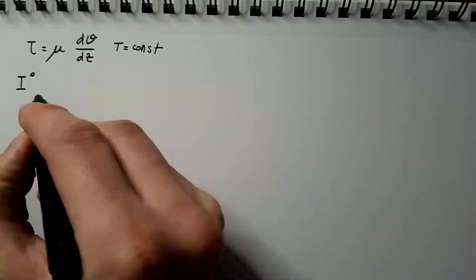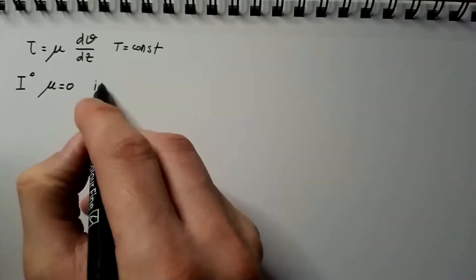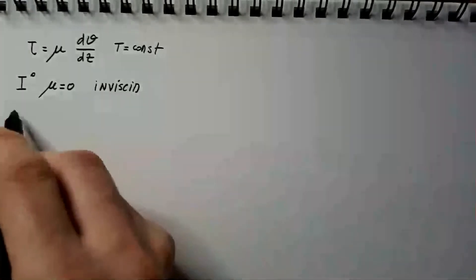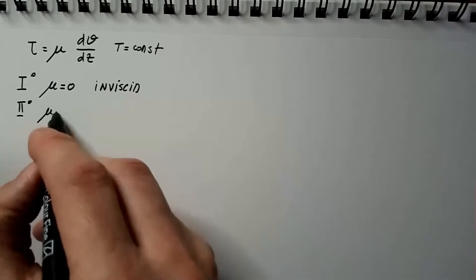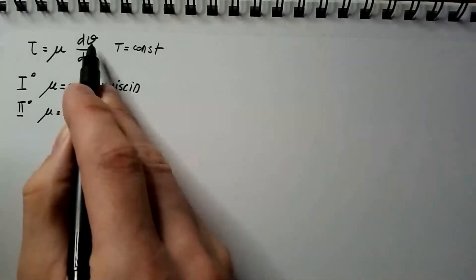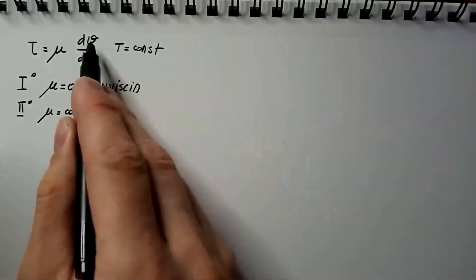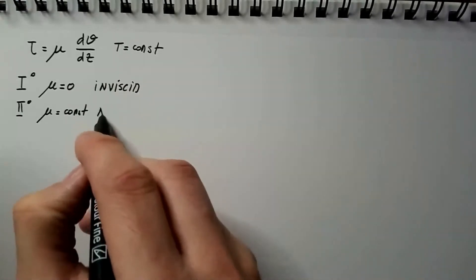Type number one is if mu is equal to zero, and these are inviscid fluids. The second type of fluids is if mu is constant in terms of dV over dz, so not constant in terms of temperature, but rate of shear deformation. If it is constant then these are Newtonian fluids.